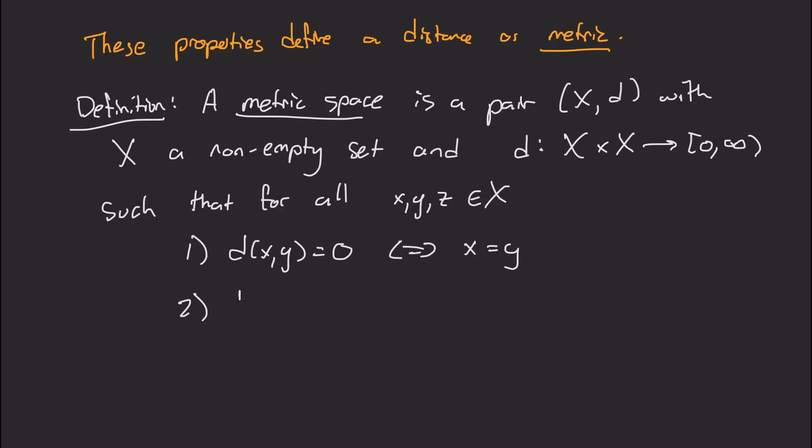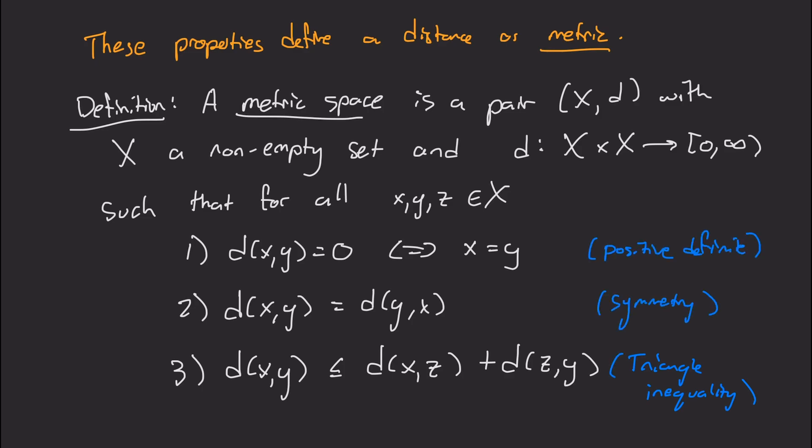Two, the distance from x to y should be the distance from y to x. And three, the distance from x to y should be less than or equal to the distance from x to z, plus the distance from z to y. So this last property is called the triangle inequality. The second property is called symmetry, and the first property is called positive definiteness.